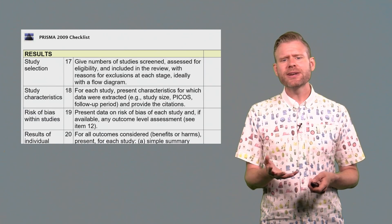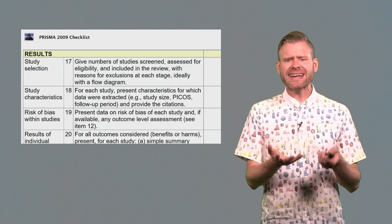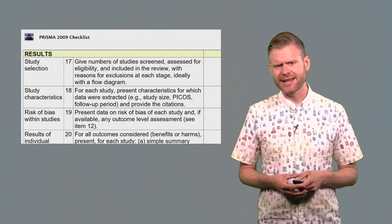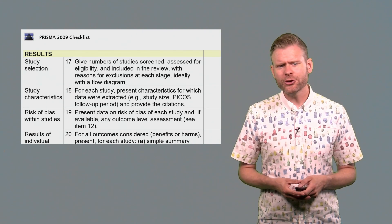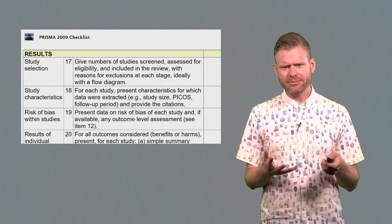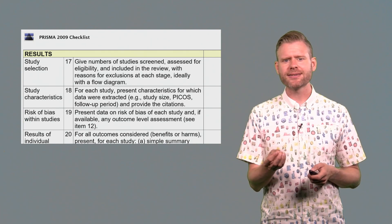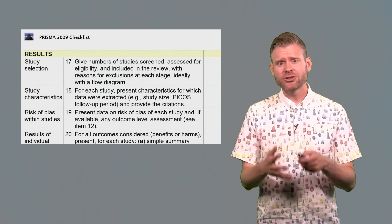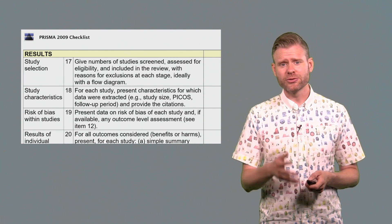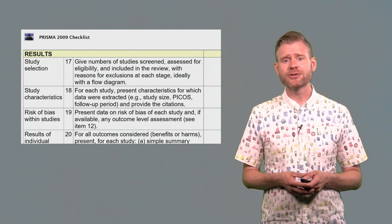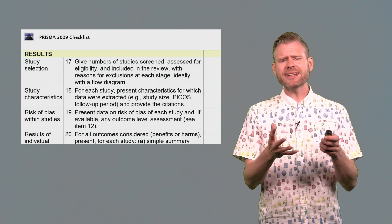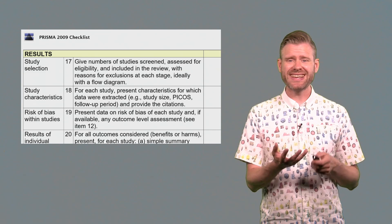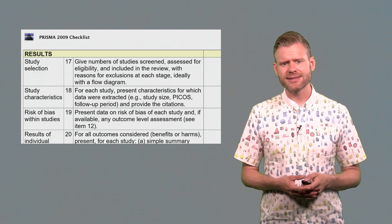Also take into account that there are available checklists and guides on what to report if you perform and publish a meta-analysis. People are not very good at making sure that the quality of a meta-analysis is state-of-the-art. Checklists such as the Prisma checklist, and a new one is going to come out very soon, so look for updates to the 2009 version. These checklists give you a guide of what to consider, what to keep in mind, and what to report if you perform a meta-analysis.